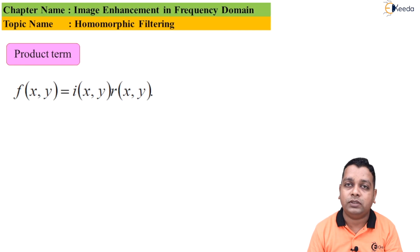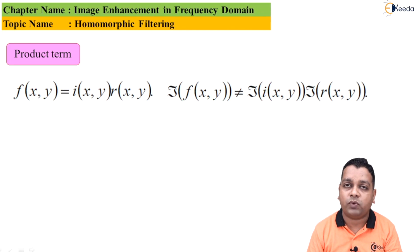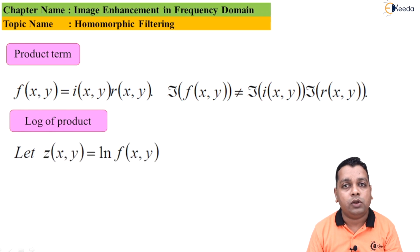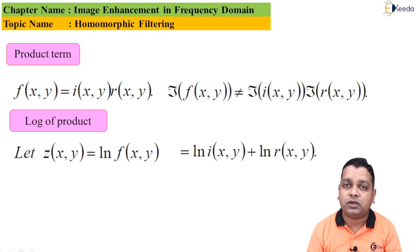We have the product i(x, y) · r(x, y) forming the image f(x, y). When we represent this product using the Fourier transform, F{f(x,y)} is not equal to the product of the individual Fourier transforms of illumination and reflection. Taking the natural logarithm of the product, we denote z(x, y) = ln[f(x, y)], which equals ln[i(x, y)] + ln[r(x, y)]. This separates the signal source into illumination and reflectance components.